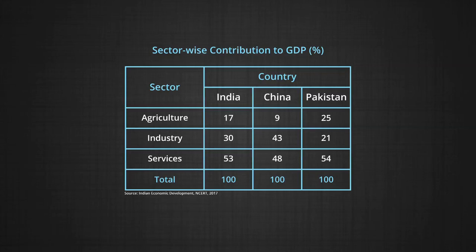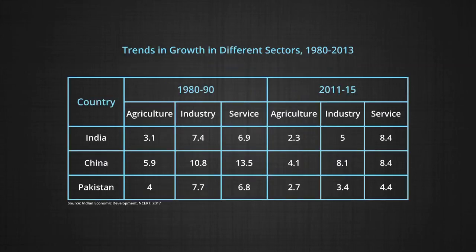Usually the economic development process involves development of the agriculture sector first, followed by the growth of the manufacturing sector, and later by the growth of the service sector. China has followed this normal growth trajectory while India and Pakistan have not shown the same pattern. Table five gives trends in growth in different sectors between 1980 to 2013. During the last three decades, growth in the agriculture sector has declined substantially. China failed to maintain double digit growth in its service as well as industrial sectors. India shows an increase in its growth rate of the service sector, though the manufacturing sector shows a decline. Pakistan shows a decline in growth rate of all three sectors.